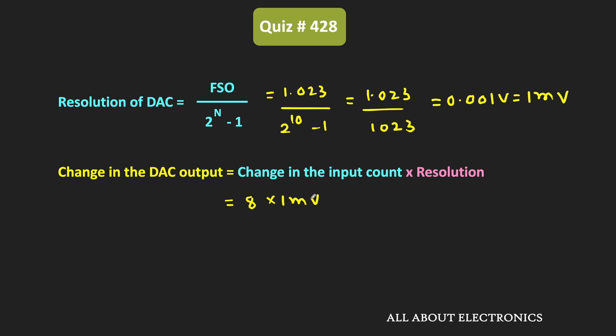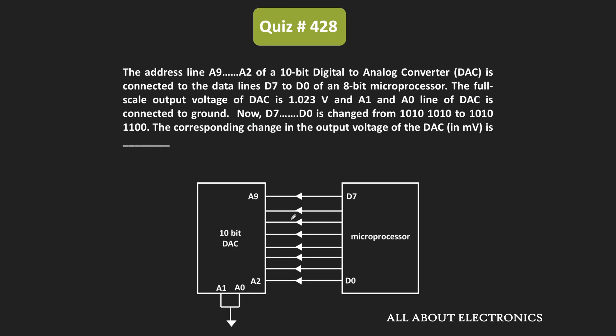That means overall, in the DAC output, there will be a change of 8mV. So for the given question, the answer is 8mV.